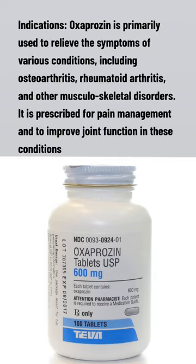Indications: Oxaprozin is primarily used to relieve the symptoms of various conditions, including osteoarthritis, rheumatoid arthritis, and other musculoskeletal disorders. It is prescribed for pain management and to improve joint function in these conditions.